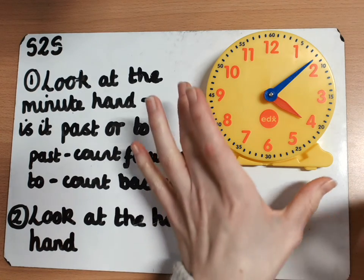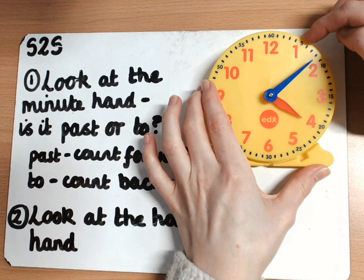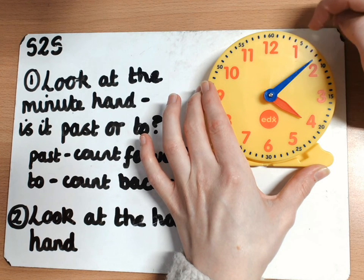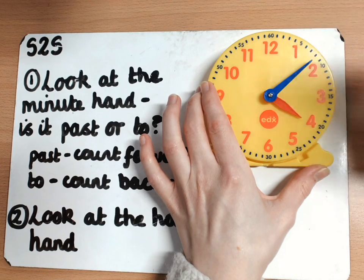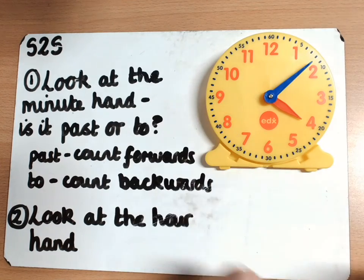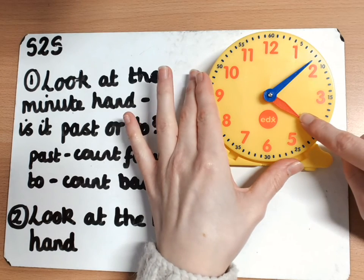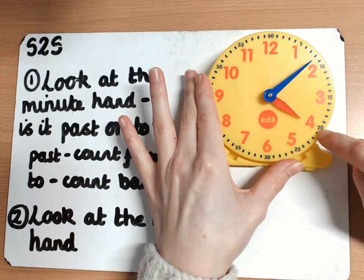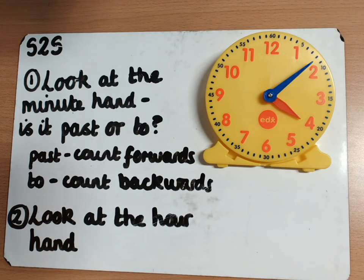Five, ten — my minute hand doesn't go past the ten, so I need to go back to five and count on: five, six, seven, eight — eight minutes past. And my step two is to look at my shorter red hour hand, which is pointing at the four. So it is eight minutes past four.